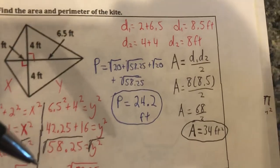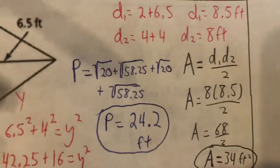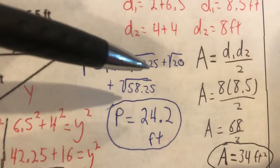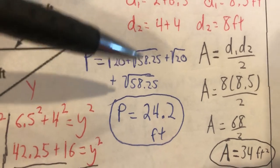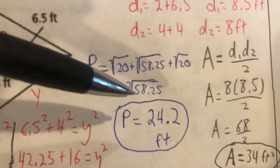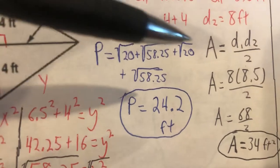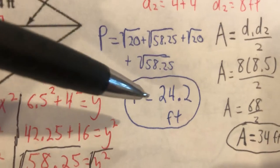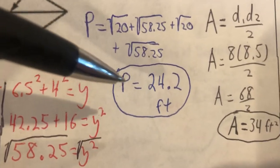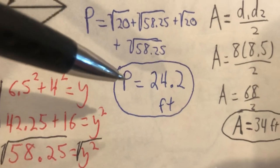Now to finish it off we just have to add the four sides together. So we have the perimeter equals root 20 plus root 58.25 plus square root of 20 plus square root of 58.25. When we add all four of those together and round to the nearest tenth, you should get that the perimeter is about 24.2 feet.